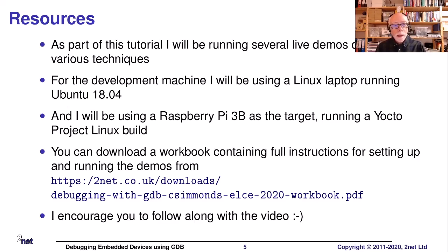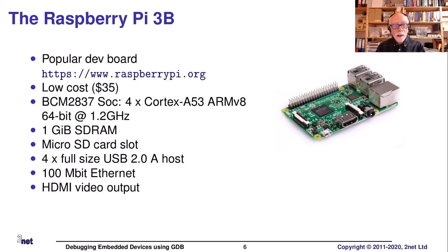I have prepared a set of instructions which you can download from the link. I encourage you to follow along with the video. The Raspberry Pi is an ARM-based device — it actually has a quad-core ARMv8 architecture processor, which is a 64-bit processor, but we're using it here in 32-bit mode. It has a micro SD card slot for booting, an Ethernet port for networking, and everything will be command line.